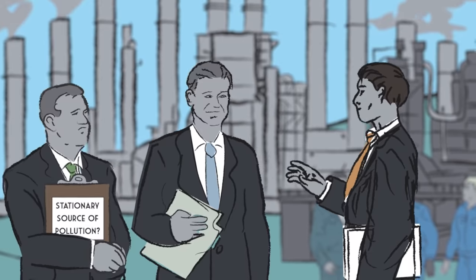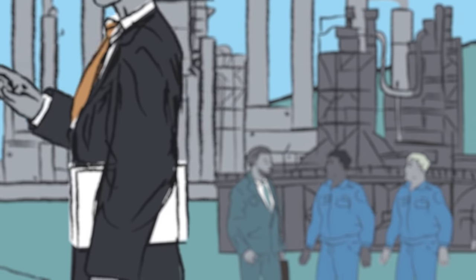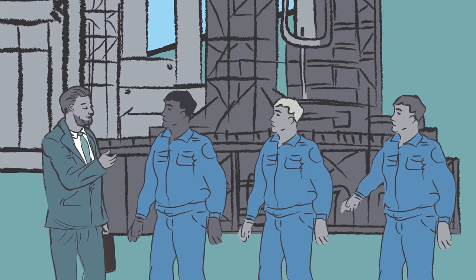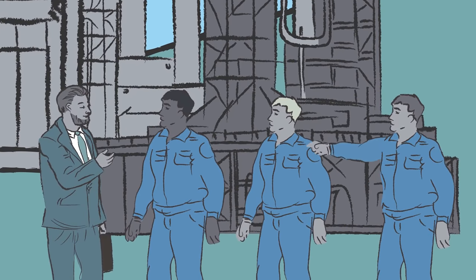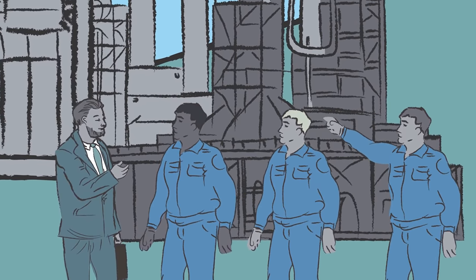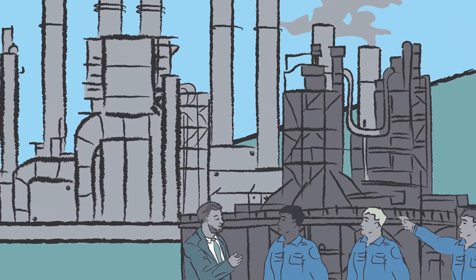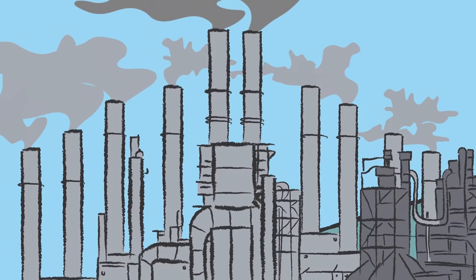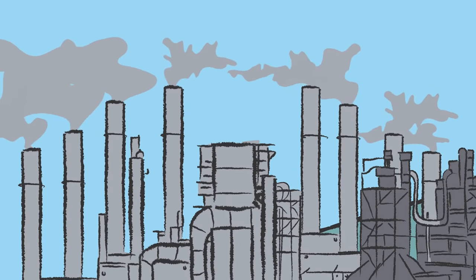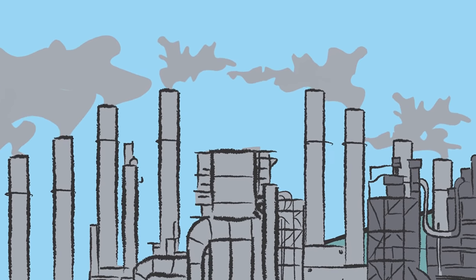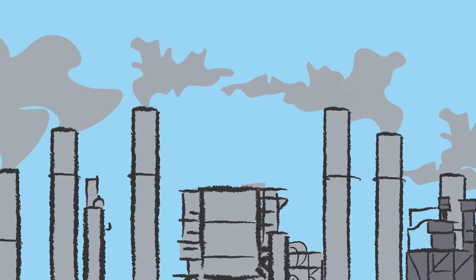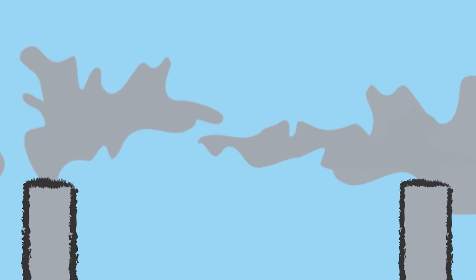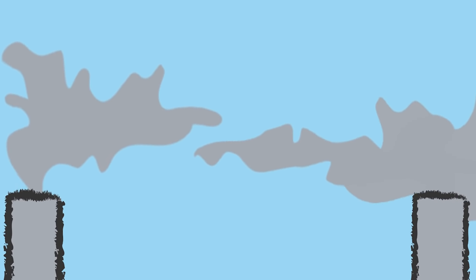The factory looks at its 10 smokestacks and says, well, eight of those smokestacks are working pretty well. Two of them really stink — two of those smokestacks are producing way more pollution. We can actually do better if we shut down those two smokestacks and move all of the production to the other eight. The total amount of stuff coming out of our factory will be less once we do that.